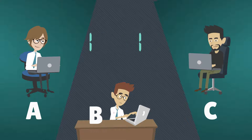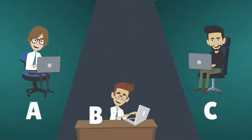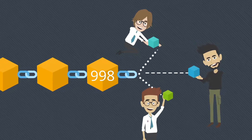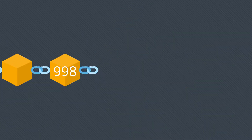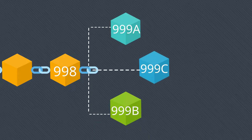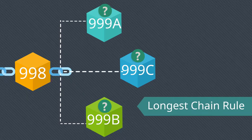These miners are trying to add the 999th block. To add the blocks, they have to solve a complex mathematical problem, and this is known as the proof of work. Let's assume all three miners were able to solve this problem and have a proof of work. Now we have three different candidate blocks — let's call them 999a, 999b, and 999c.